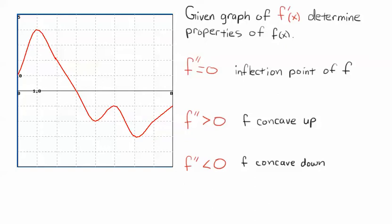Recall that if f'' is equal to 0, then we have an inflection point for f. If f'' is greater than 0, f is concave up. And if f'' is less than 0, f is concave down. We can remember that with these little pictures here — these little faces. f'' positive means concave up; f'' negative means concave down.